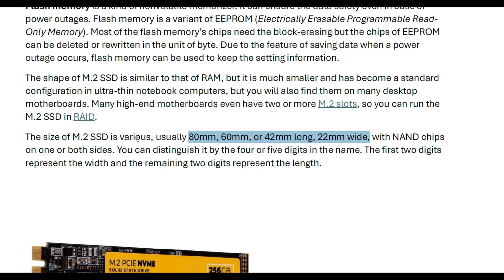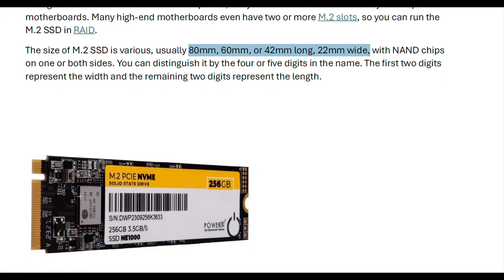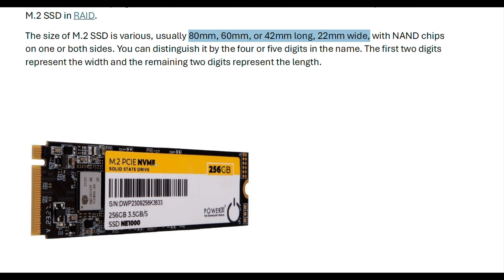You can see the form factors on an M.2 SSD with chips on both sides. You can distinguish them by the four or five digit name — the first two digits represent the width and the remaining digits represent the length. This is a typical M.2 SSD which looks like RAM. The transfer rate is 3.5 Gbps.